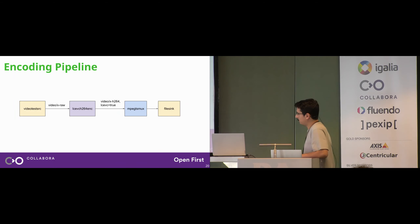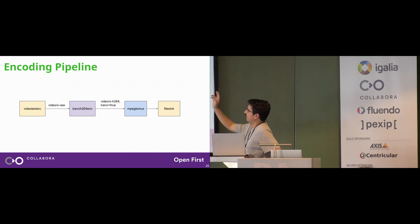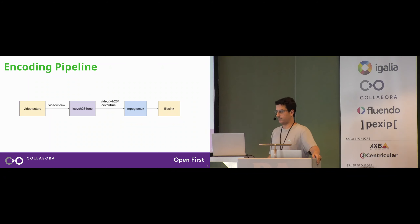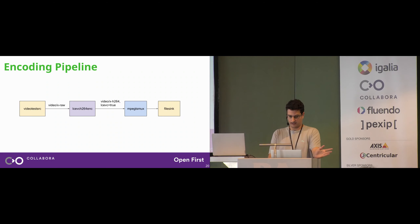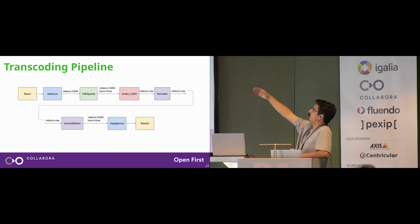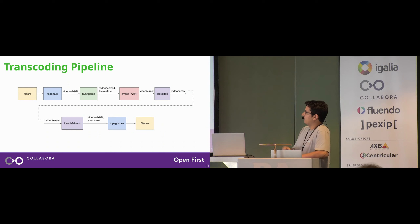An encoding pipeline is as easy as: video test source, the H.264 LC-EVC encoder element, the output caps have lcevc=true, and the LC-EVC enhancement data is attached to the video stream using a supplemental enhanced information null unit, then a muxer and filesink. A transcoding pipeline also works: demuxer, parser, AVDEC, then the enhancer element, then encode it back — all with a simple gst-launch pipeline.